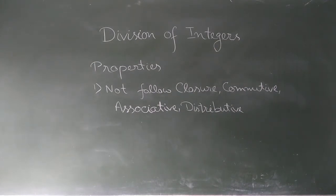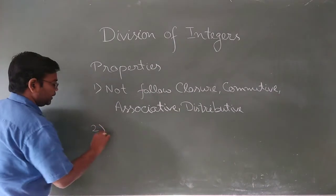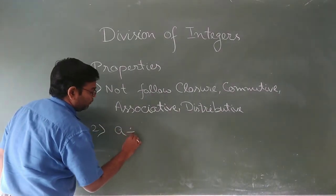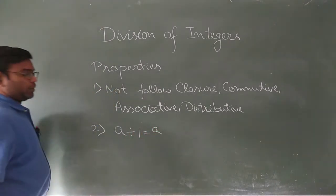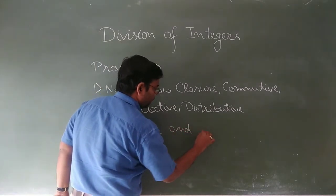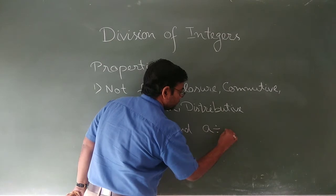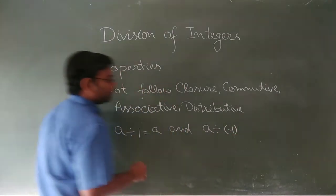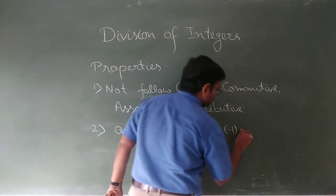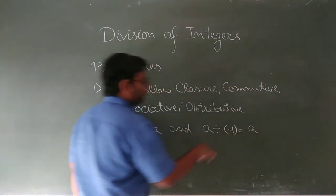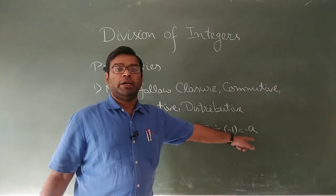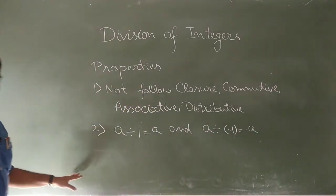Second property: whenever we divide any integer a by one, we get the same result, a. And if we divide any integer a by minus one, it gives you the negative of that integer, that is minus a. So dividing by one keeps the integer the same, and dividing by negative one negates it.